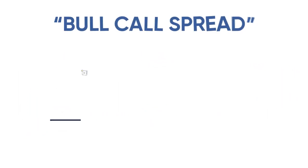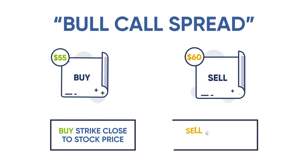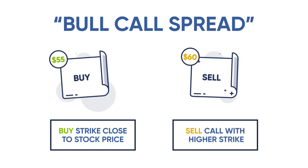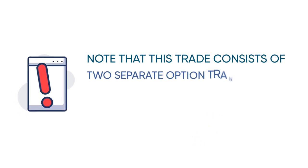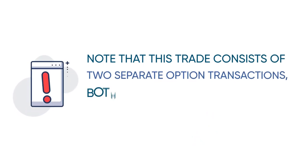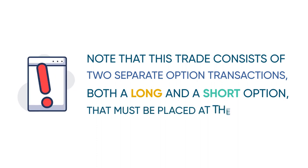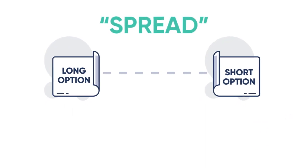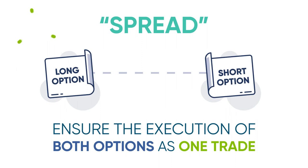For example, you could buy a strike close to where the stock is trading while selling a call option that has a higher strike. Note that this trade consists of two separate option transactions — both a long and a short option — that must be placed at the same time. Therefore, you should ensure that you place the trade as a spread order to ensure the execution of both options as one trade.